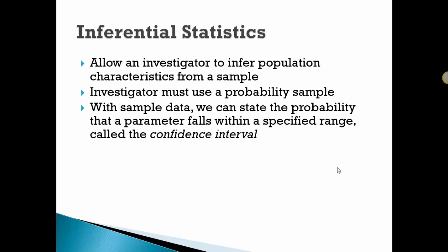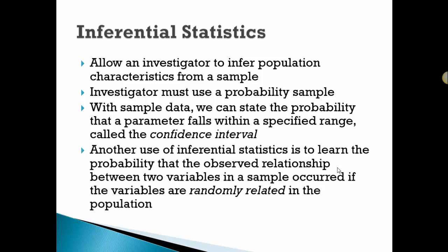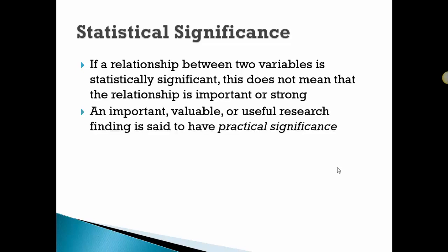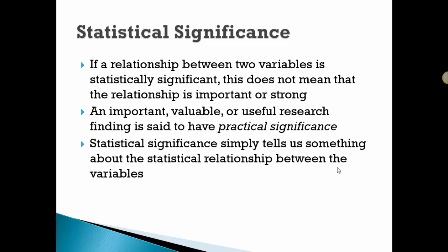With sample data, we can state the probability that a parameter falls within a specified range that we call a confidence interval. Another use of inferential statistics is to learn the probability that the observed relationship could have occurred if the variables were randomly related in the population. If the relationship between the variables is statistically significant, it doesn't mean that it's strong or important, and we need to understand whether or not there's practical significance to what we've identified.